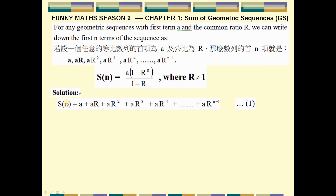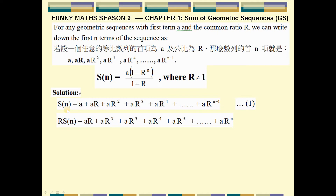Now I multiply R to equation 1. The right hand side becomes R times S_N. On the left hand side, A becomes AR, AR becomes AR squared, and the last term AR to the power N minus 1 becomes AR to the power N. This is equation 2.